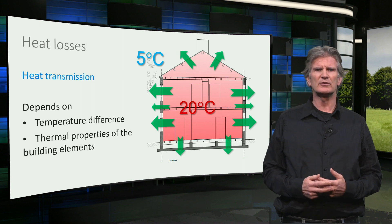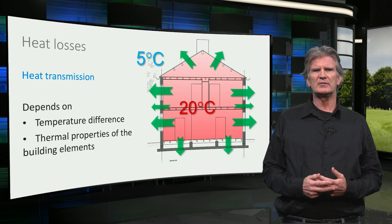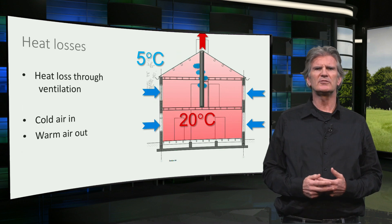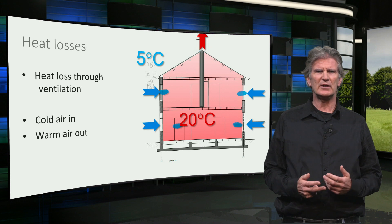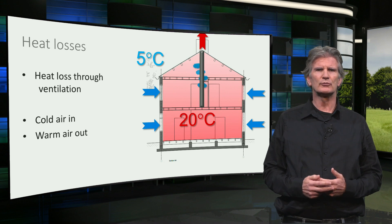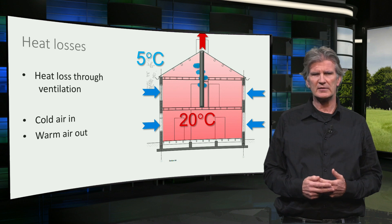The amount of heat transmission is dependent on the temperature difference and the thermal properties of the envelope. We will come back to that in one of the next lectures. Another way energy gets lost is through ventilation. Fresh outdoor air is blown into the house and warm indoor air is exhausted. This is necessary to control the indoor air quality, but it also causes a heat loss through ventilation.